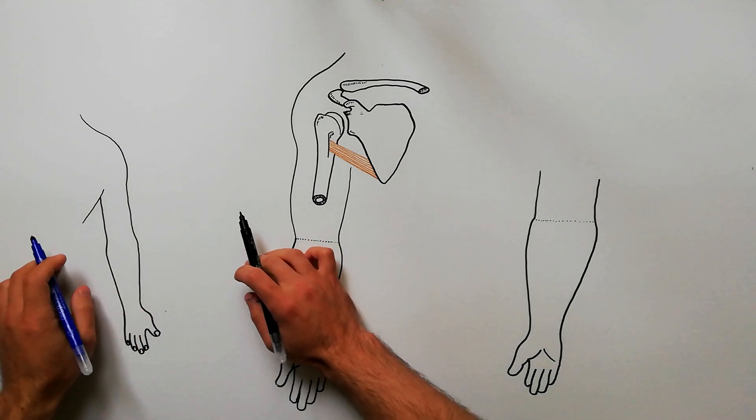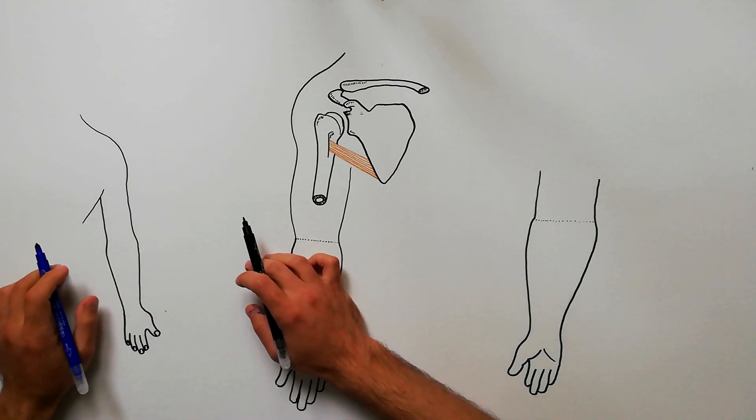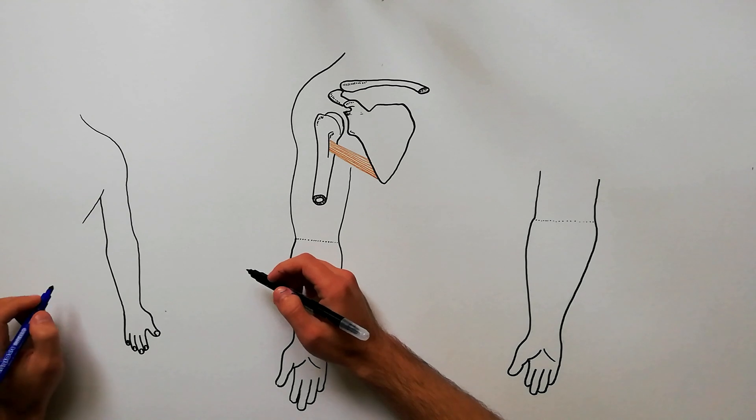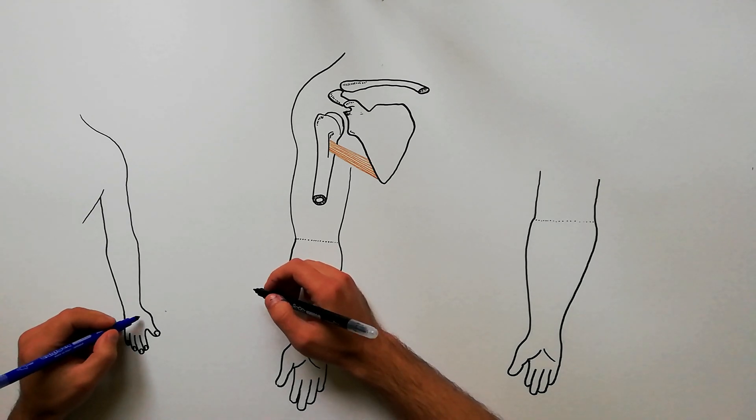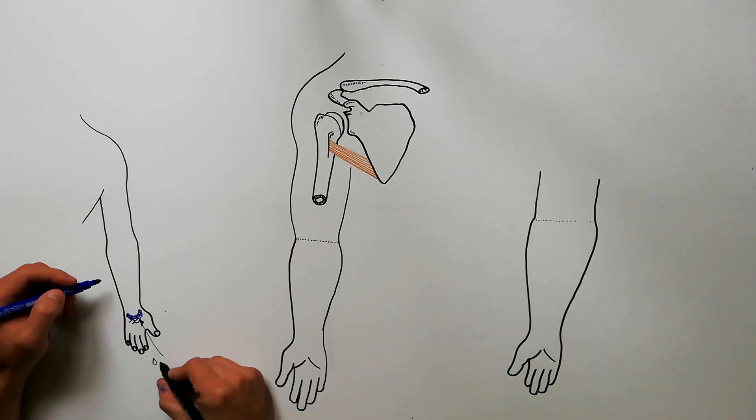There are two main superficial veins of the upper limb: the basilic vein and the cephalic vein. Both arise from the dorsal venous arch, which lies on the dorsum of the hand and has a network aspect.